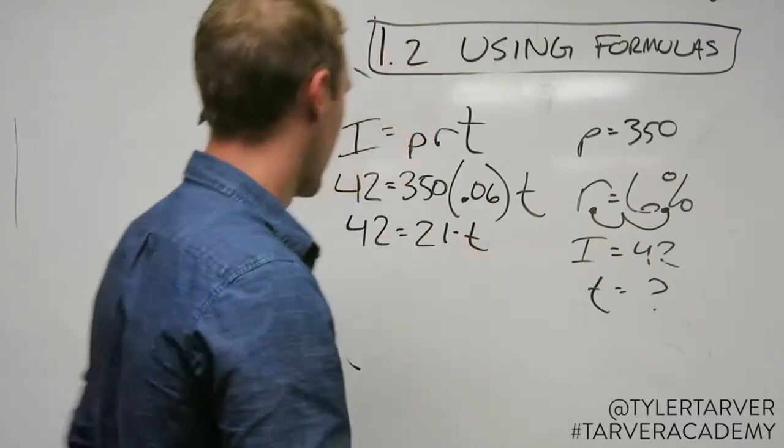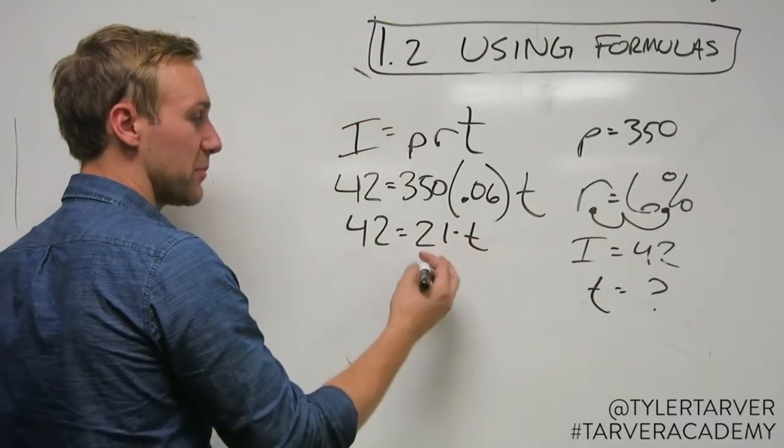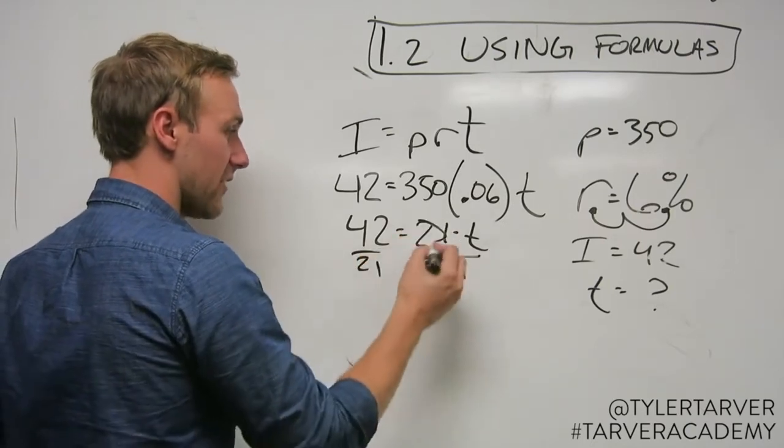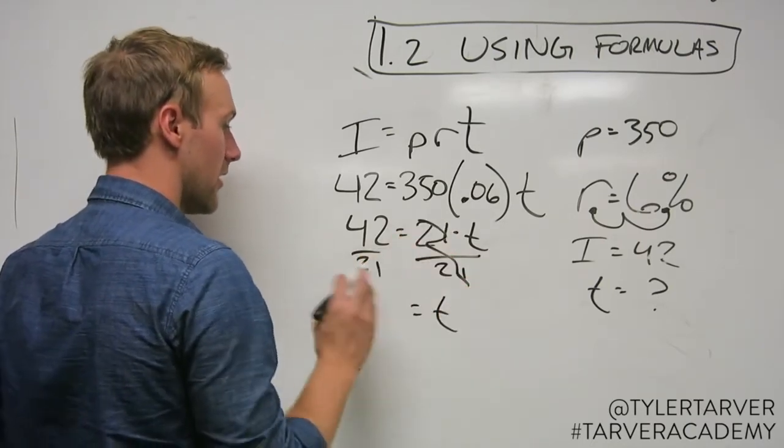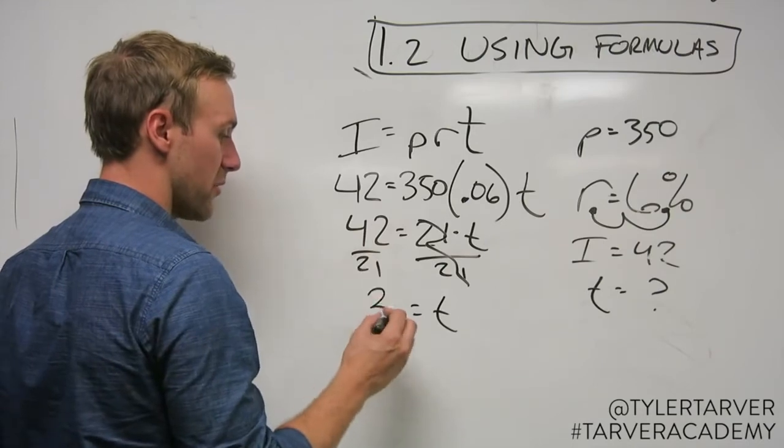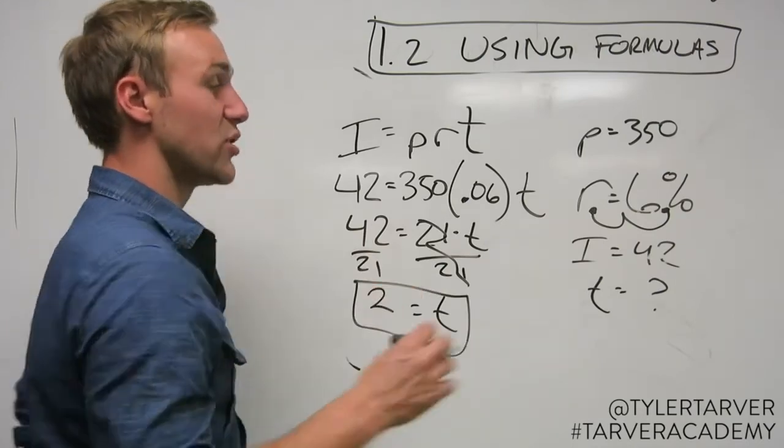Let's find out. I'm going to do 350 times .06, and it's 21 times t. Now, last step. It's being multiplied, so to get rid of 21, I do the opposite which is divide. That goes away, and then 42 divided by 21 is 2. So our time is 2 years.